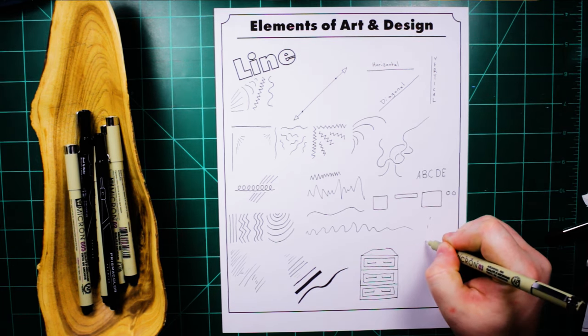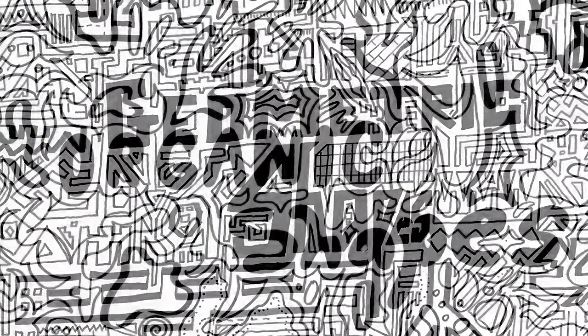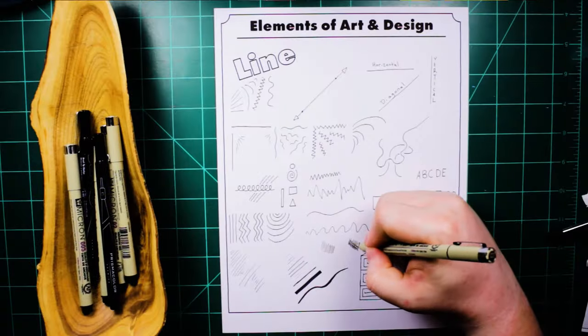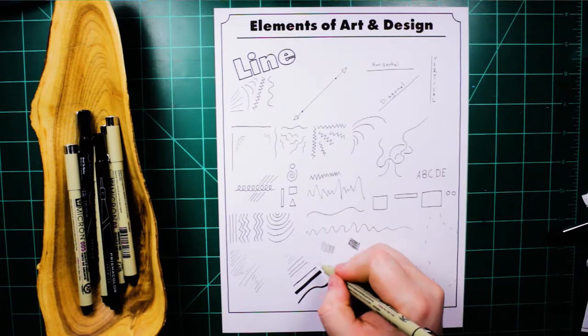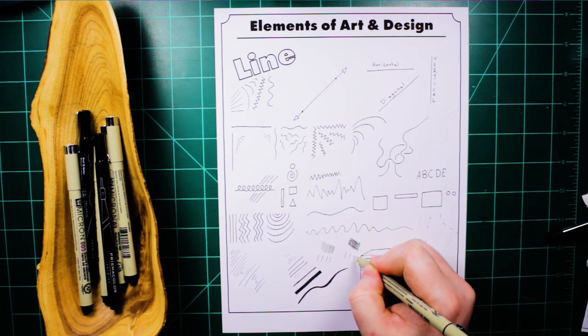Lines are most commonly used either by themselves or mixed together to create shapes, which are the next element that we'll discuss next Thursday. Lines can also be used as hatching or cross-hatching to create different values, which we'll cover in two weeks' time.